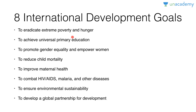Second goal is to achieve universal primary education. Just remember the child is not wanting to go to school and his mother is beating him up with shoes, then he reluctantly goes to school and forgets to wear his shoes and is beaten up by his PTI. Two is shoe, and two deals with universal primary education.